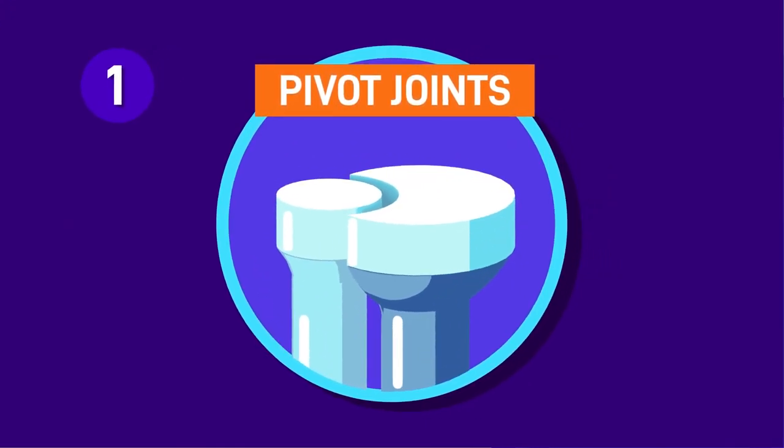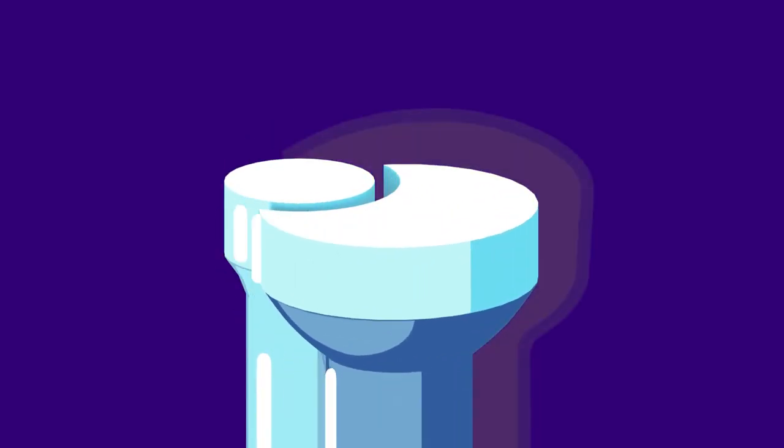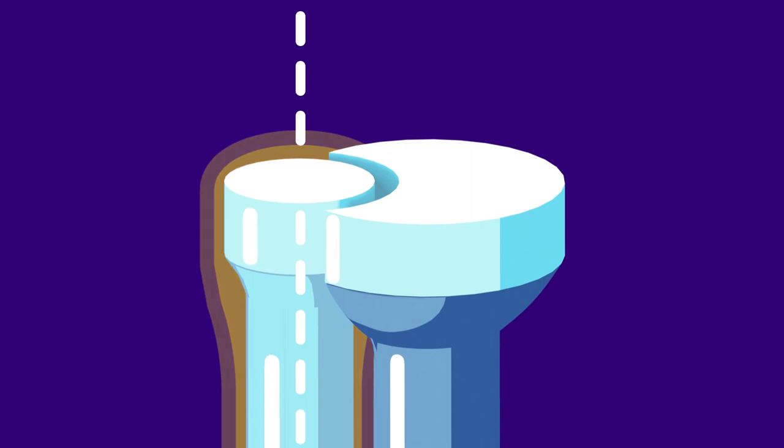Pivot joints. Pivot joints move side to side. They are uniaxial, which only allow the rotation of one bone around its own long axis.